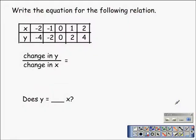If we take a look at this example here, this is from chapter 5, lesson 6, where we're being asked to write an equation for the following relation. What we did is we found the change in y values and made a fraction out of it by putting it over the change in x values.